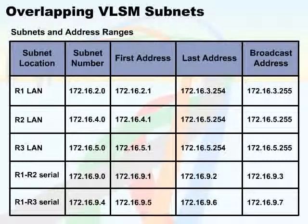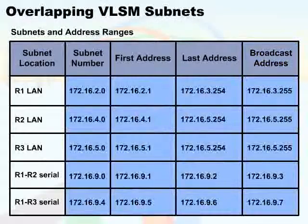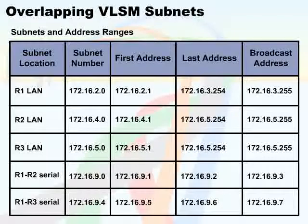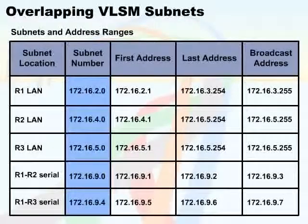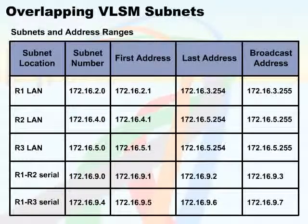For the diagram displayed on the screen, the subnet numbers, broadcast addresses, and range of addresses of the five subnets are displayed in the table. Observe the table. The subnet numbers all appear different. So, where's the problem? Let's take a closer look.